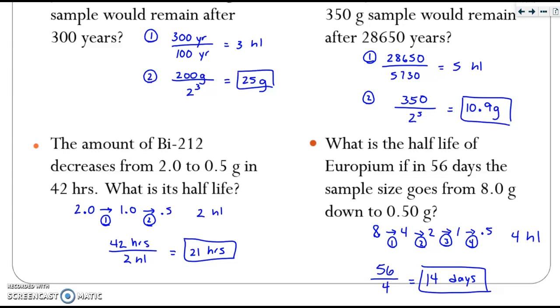For the second problem, it was asking you to calculate half-lives, so it was a backwards problem. You should have gotten 4 half-lives to go from 8 grams to 0.5, and then take the total given time divided by 4 to find that the half-life is about 14 days.